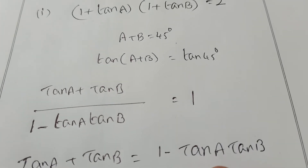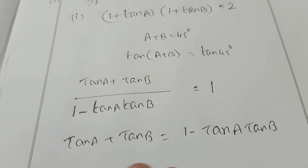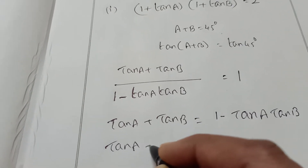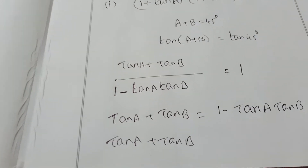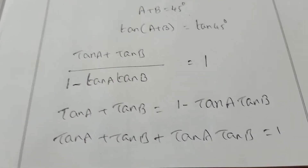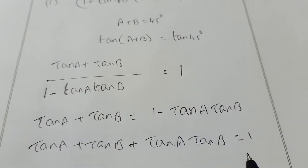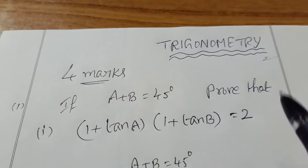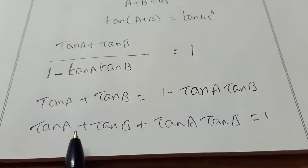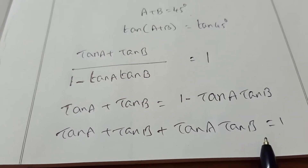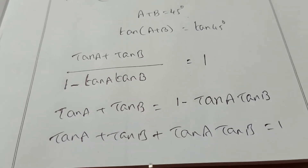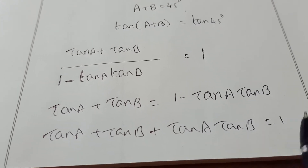Send the minus tan A tan B to the other side — it becomes positive. So tan A plus tan B plus tan A tan B equals 1. But we want 2 on the right side, so add 1 on both sides.